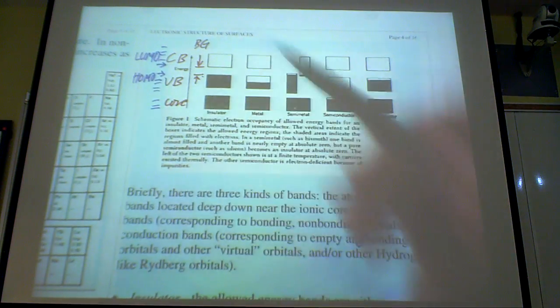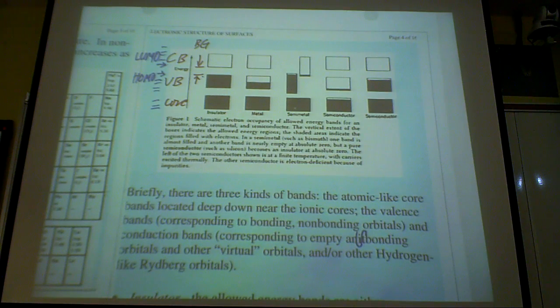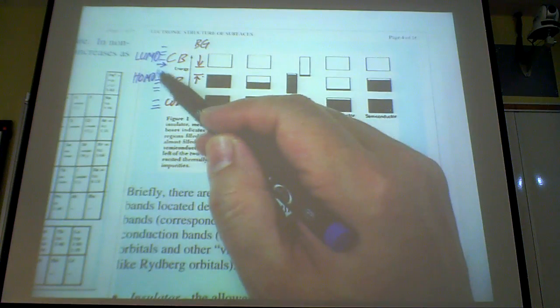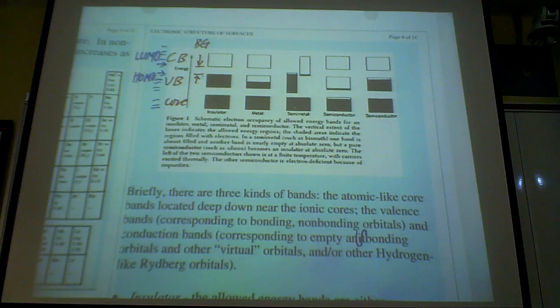The next one is usually called lowest unoccupied molecular orbital, LUMO. And then usually there's an energy gap between the HOMO and LUMO.